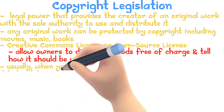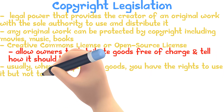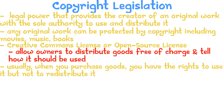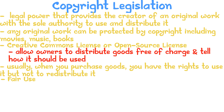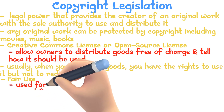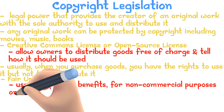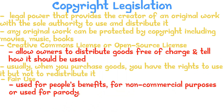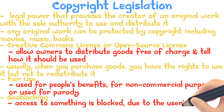Usually when you buy a product you have the right to use it but not to redistribute it. One exemption of copyright law is fair use, which covers copies, recordings, and broadcasts used for people's benefit for non-commercial purposes only, or used for parody. Another type of copyright restriction is geo-blocking, where access to content is blocked based on the user's location.